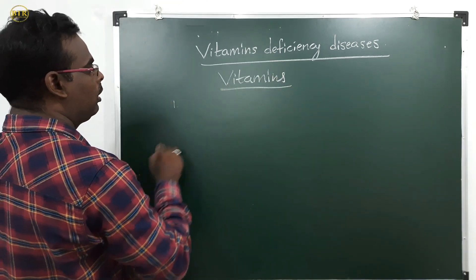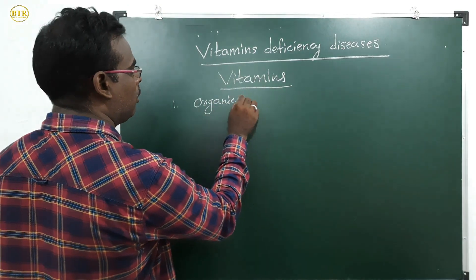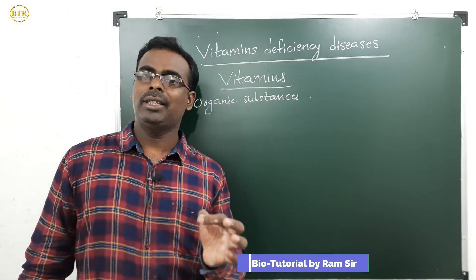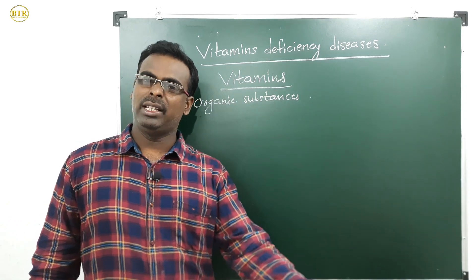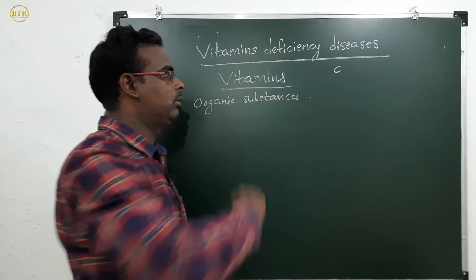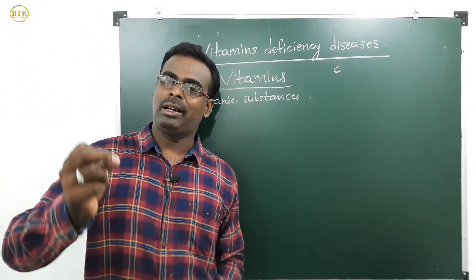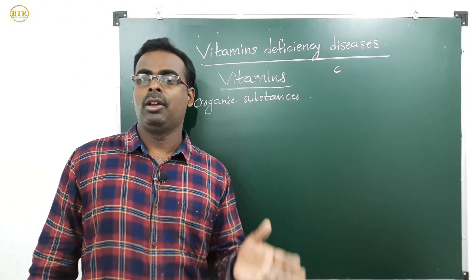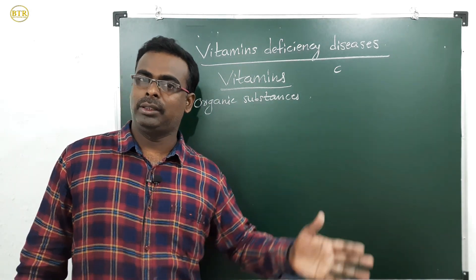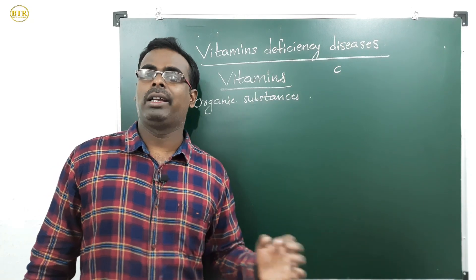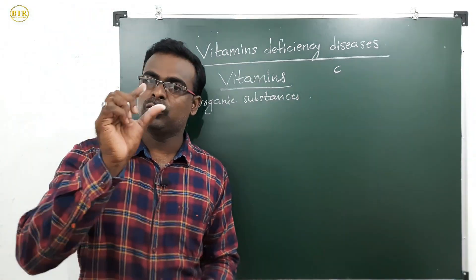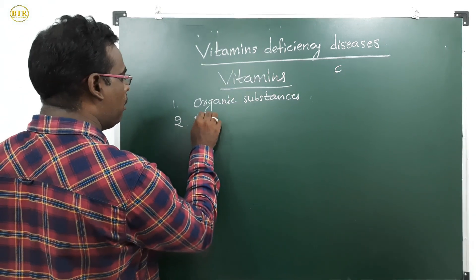Vitamins are organic substances. The substances which contain the element carbon (symbol C) are called organic substances. Vitamins are also organic substances. Carbohydrates, proteins, fats, and nucleic acids all contain the element carbon, which is why these are all organic substances.